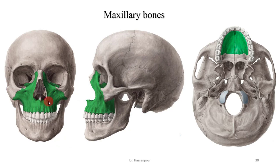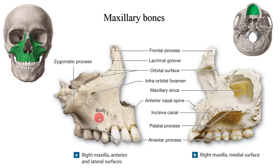Here we can see the maxillary. The maxillary is a paired bone consisting of the right and left maxilla which fuse in the midline. It is also known as the upper jaw and is a vital structure of the viscerocranium. It's involved in the formation of the bony orbit as well as the nose and the palate, and it holds the upper or maxillary teeth, playing an important role in mastication and communication. The maxilla consists of the body and its four projections: frontal process, zygomatic process, palatine process, and the alveolar process.